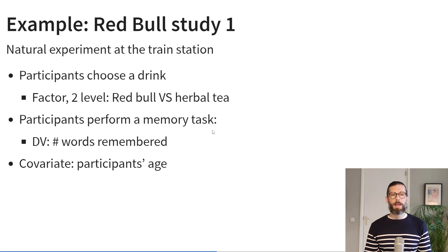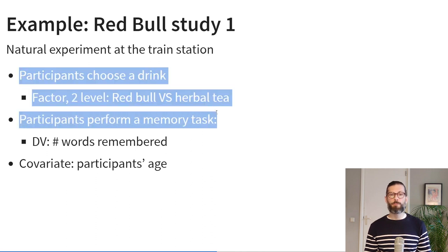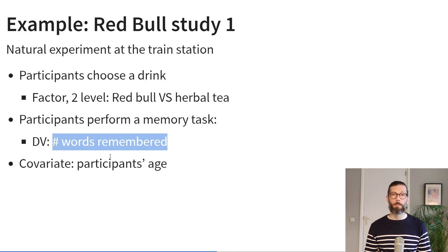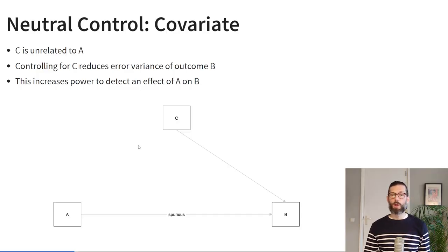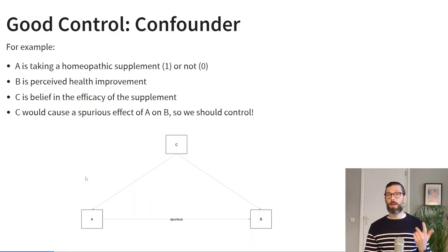First, let's consider some example data. Imagine I conduct a natural experiment at the train station. Participants choose a drink from a cooler — either Red Bull or herbal tea — represented by a binary factor variable. After having the drink, participants perform a memory task, and the dependent variable is how many words they remembered. I'll also control for a covariate: participants' age. Age is either a neutral control — causally affecting words remembered but not drink choice — or a good control if younger people tend to prefer Red Bull, in which case age also affects drink selection.